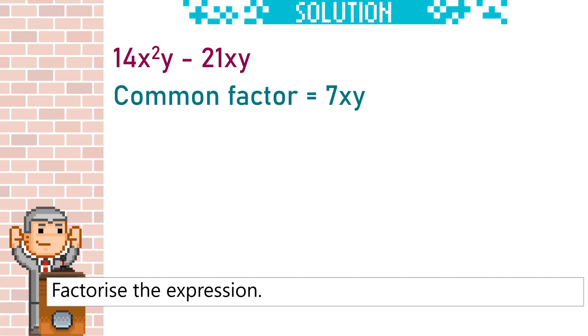Put this outside of a bracket and we divide them both by the 7xy. So 14 divided by 7 is 2. x times x times y divided by x times y.